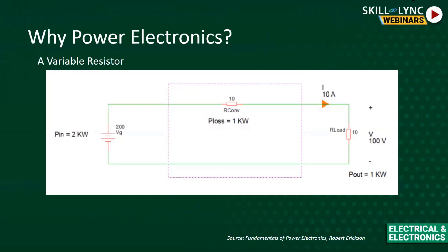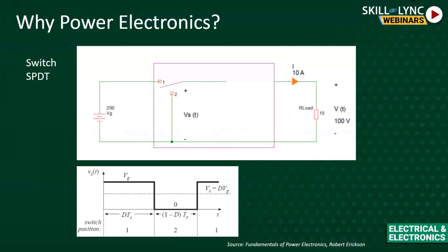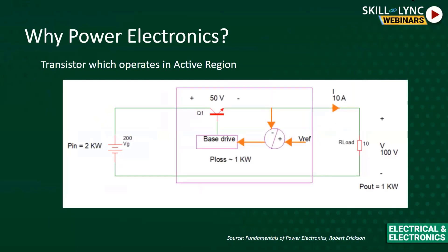Another option is using a transistor operating in the active region, but this is no different from the resistor divider - it dissipates approximately 1 kW. The transistor needs a base drive taken from the output, but it still operates in the active region, so the losses are still approximately 1 kW. Do we have a better method? Yes, we do.